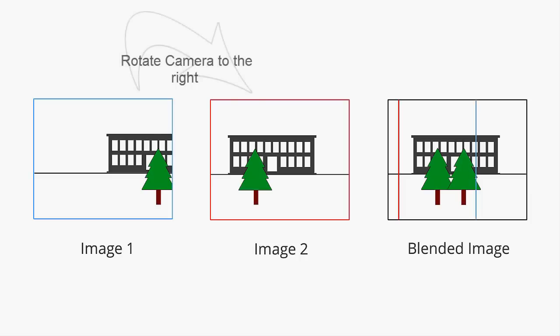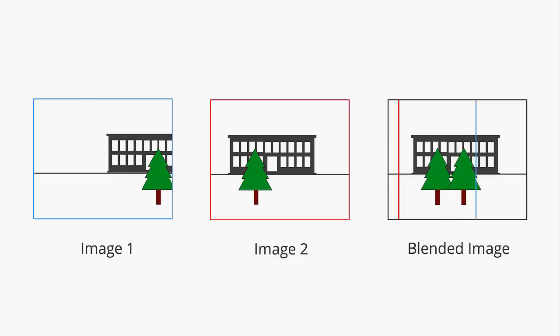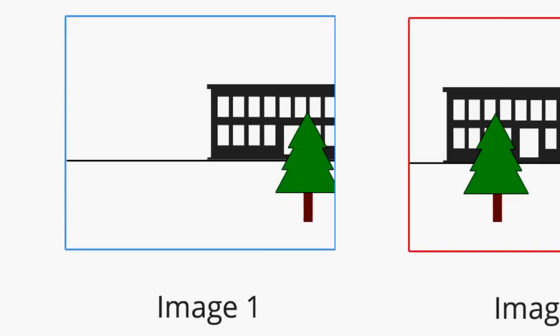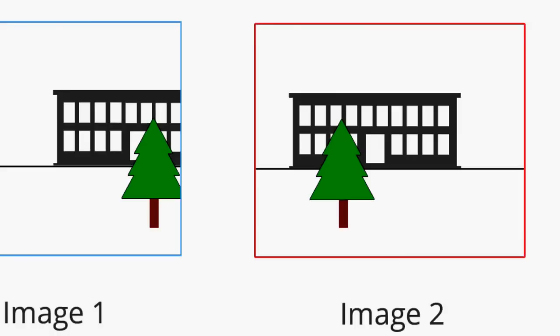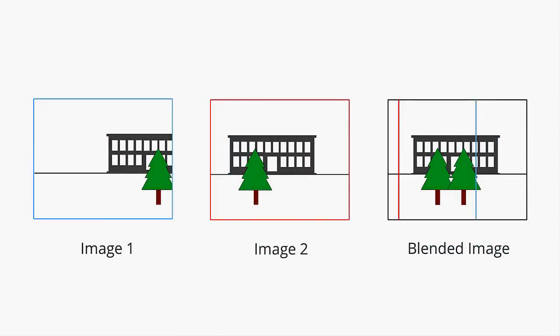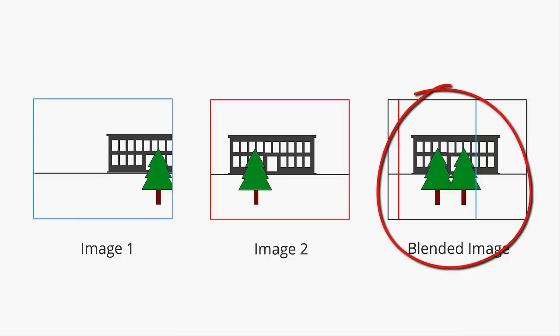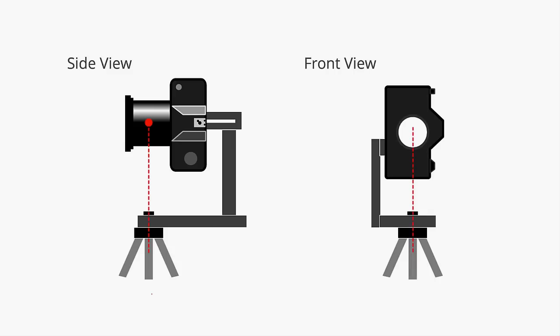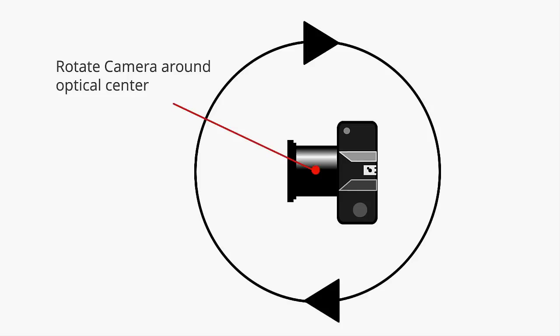Parallax errors are misalignments that occur whenever you're not rotating above your camera's optical center or no-parallax point. This makes it seem as if objects in the foreground had moved in relation to the background. Note how after rotating the camera to the right for image number 2, the tree doesn't cover the building's door anymore, but rather seems to have moved to the left — it's the same effect as holding up a finger and switching between closing your left and right eye. When stitching these images together, the object will appear twice, an error that cannot be eliminated by panoramic software. Therefore, especially in small rooms or whenever you have objects in the foreground and background, it is essential that you find the optical center or nodal point of your lens and rotate exactly above it.